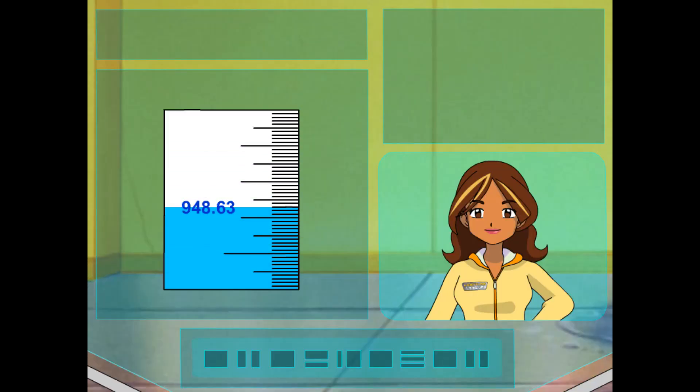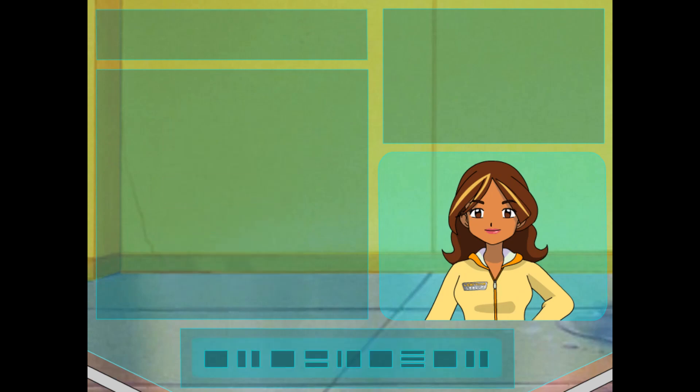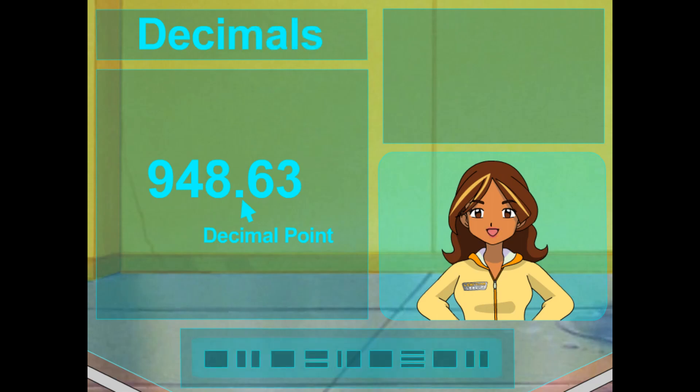The measuring stick says 9, 4, 8, 6, 3. But it's written in a way that has a period in the middle of the number. Oh, I see what you mean now. That dot is called a decimal point. That's a way to break up whole numbers to make precise measurements down to the smallest fraction. Those numbers to the right of the dot tell the parts of a whole, and it's called a decimal.